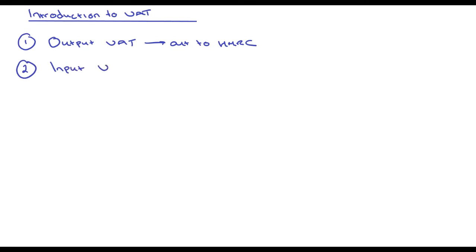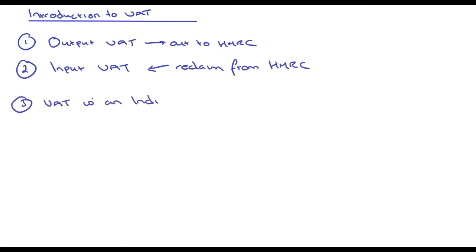Next we have input VAT, and that is amounts that we can claim back from HMRC. So if we've bought purchases in the year, in the month, whatever time period that might be, then we might be able to reclaim the VAT that we've paid on such purchases. Input VAT is VAT coming into our company; output VAT is going out to HMRC.